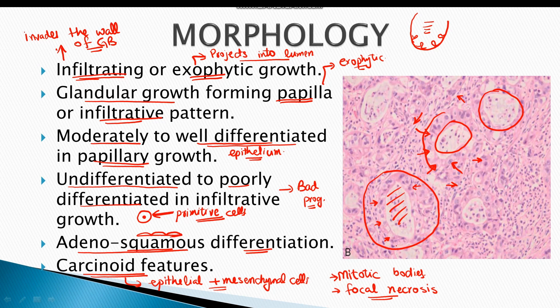Mitotic figures are less numerous in benign tumors. Fourth, focal necrosis is present in malignant tumors and absent in benign tumors. Fifth, the specific identification feature of this tumor is adenosquamous differentiation of the cells and carcinoid features — meaning both epithelial and mesenchymal cells are present in the tumor.